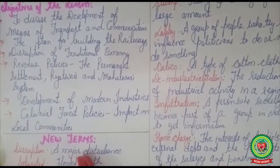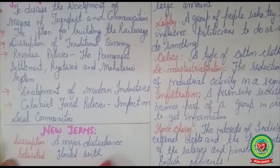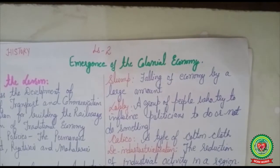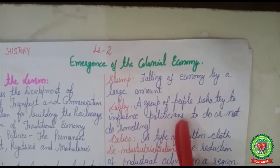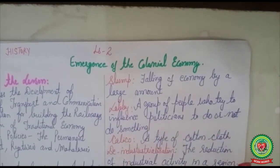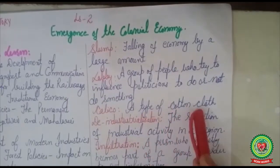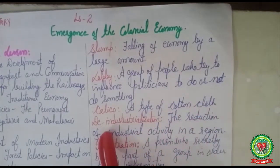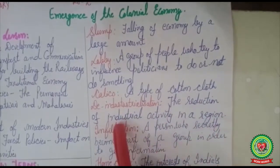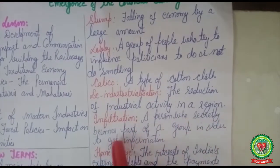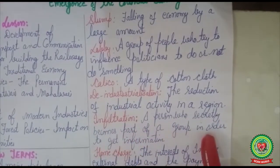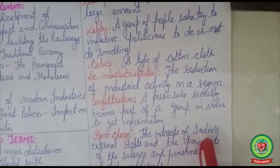Disruption means a major disturbance. Saturated means flooded with. Slump means falling of economy by a large amount. Lobby means a group of people who try to influence politicians to do or not do something. Calico is a type of cotton cloth, usually white in color. Deindustrialization means the reduction of industrial activity in a region. Infiltration means a person who secretly becomes part of a group in order to get some information.